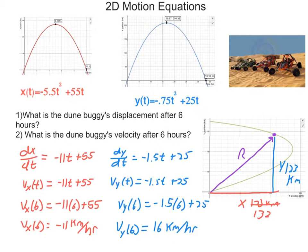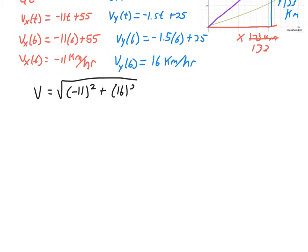Now I have my two components to find the actual magnitude of my resulting velocity. We use Pythagorean theorem. So this dune buggy at the six-hour mark is moving at approximately 19 kilometers per hour, 19.4 kilometers per hour.